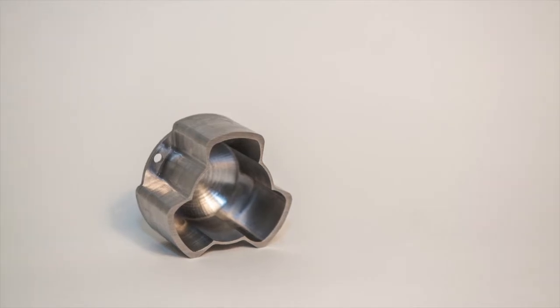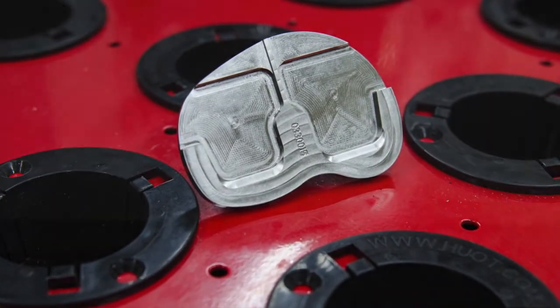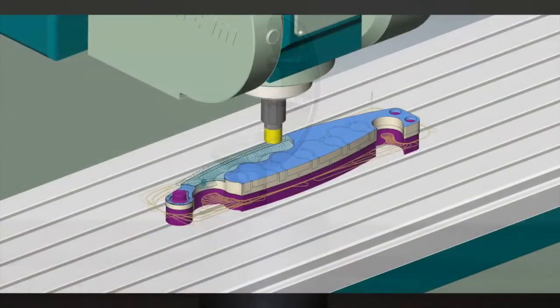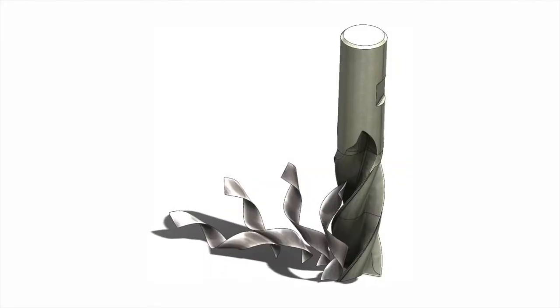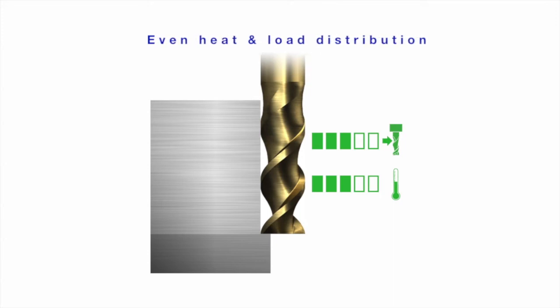Roughing materials like cobalt and titanium have always posed a challenge to shops. Mastercam's dynamic motion technology makes this task significantly easier. The dynamic toolpath motion produces a consistent chip thickness which ensures even heat distribution and load throughout the cut.